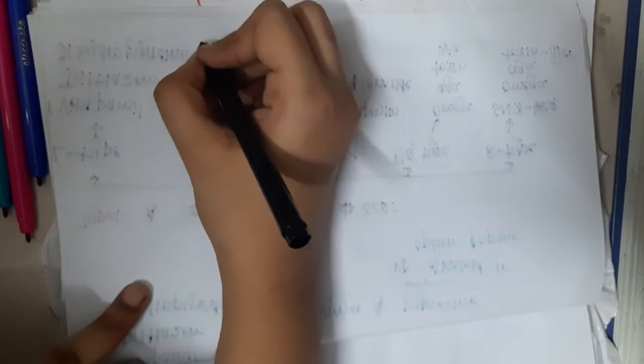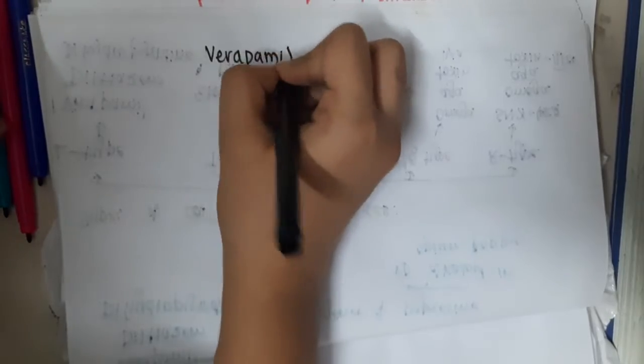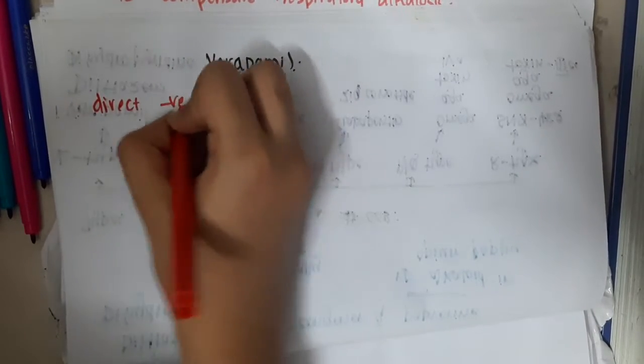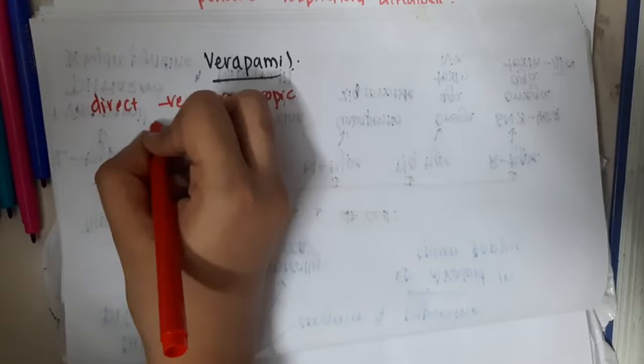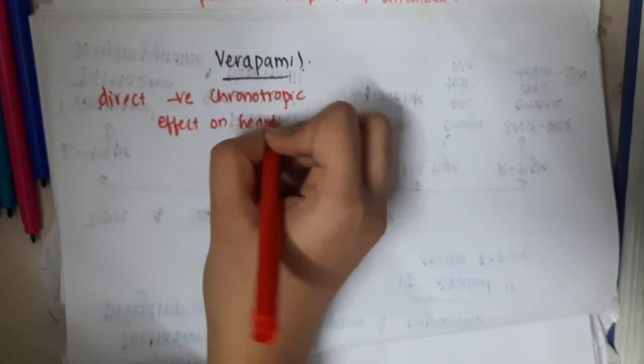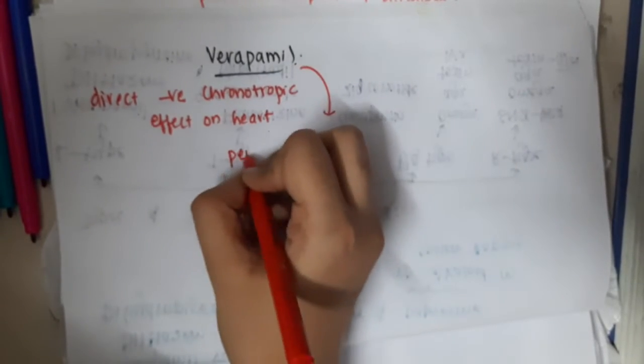Verapamil has a direct negative chronotropic effect on the heart. It causes peripheral vasodilatation.